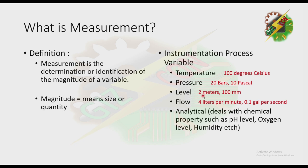For level, we have 2 meters — 2 meters is the magnitude and meters is the unit. We also have 100 mm. For flow, we have 4 liters per minute — 4 is the magnitude and liters per minute is the unit. We also have 0.1 gallon per second. For analytical, it deals with chemical properties such as pH or acidity, oxygen level, humidity, and so on.